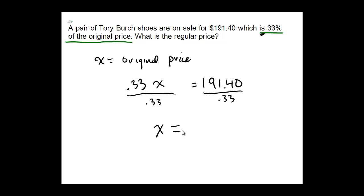191.4 divided by 0.33, which is $580. And as a ballpark, 580 is pretty close to 600. A third of 600 is around 200, so this looks like it's in the right ballpark and it is the correct answer.